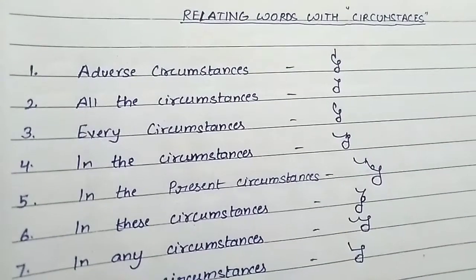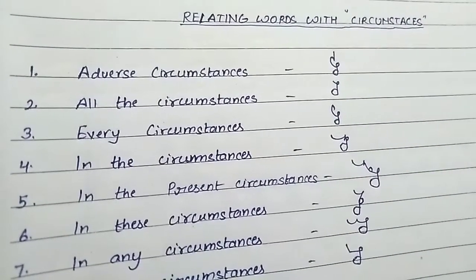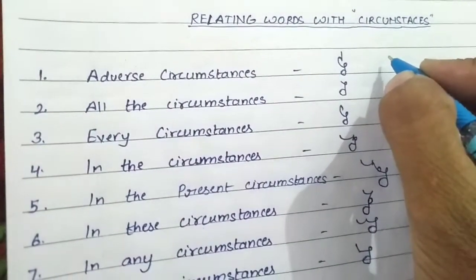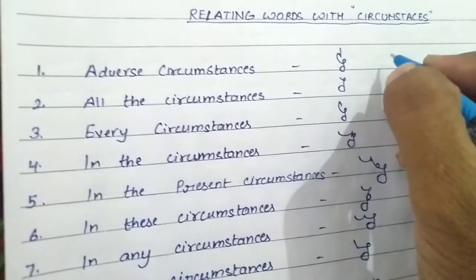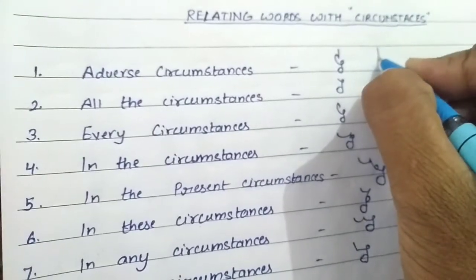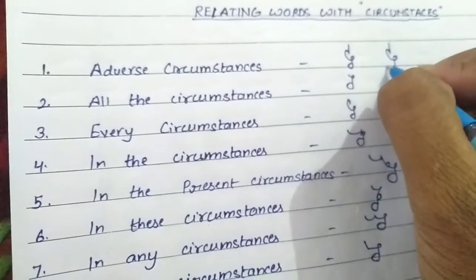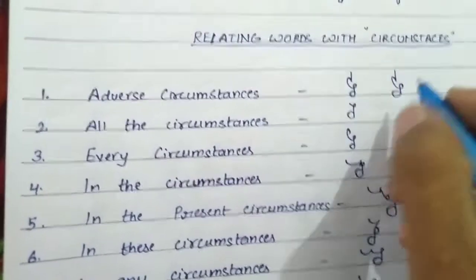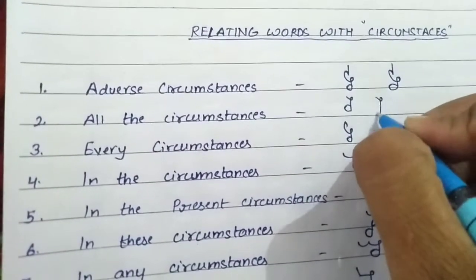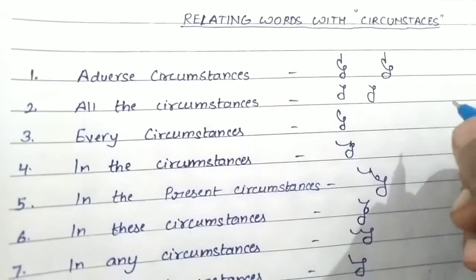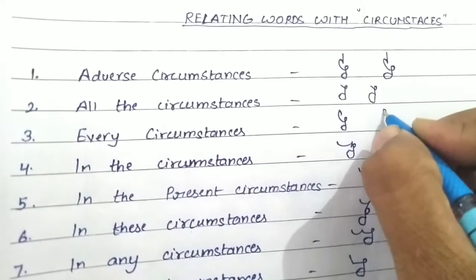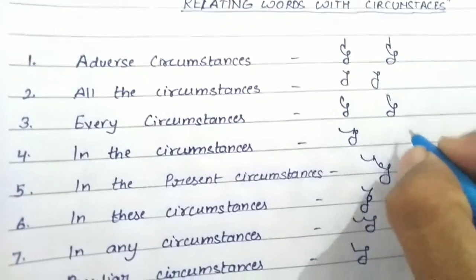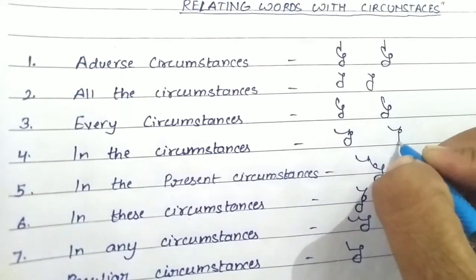Friends, we have covered consideration-related words. Now we will do circumstances-related phrases, which always come together. The first is: adverse circumstances. The second phrase is: all the circumstances. Similarly comes: every circumstances. And the fourth: in the circumstances.